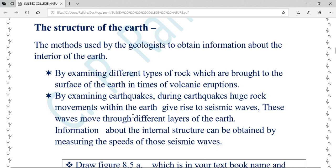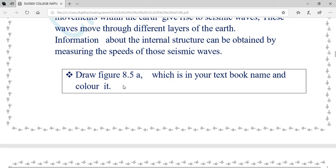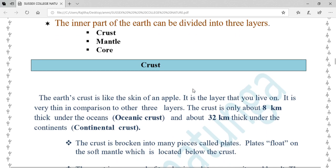These waves move through different layers of the earth. Information about the internal structure can be obtained by measuring the speeds of those seismic waves. Then you have to draw figure 8a which is in your textbook, name and color it.